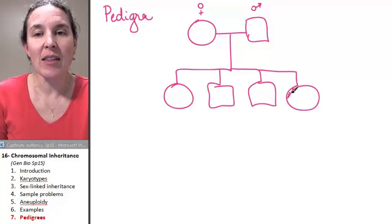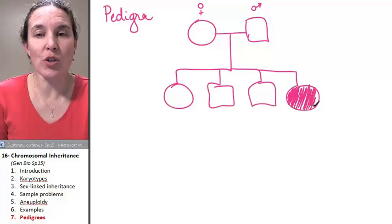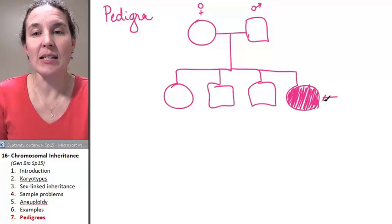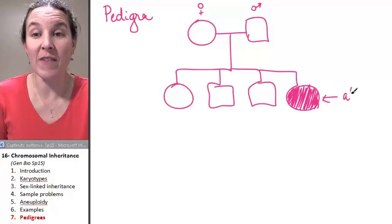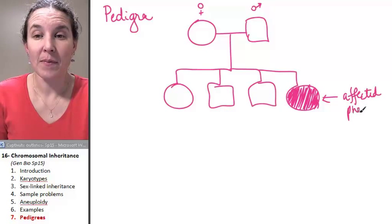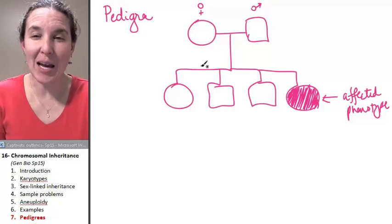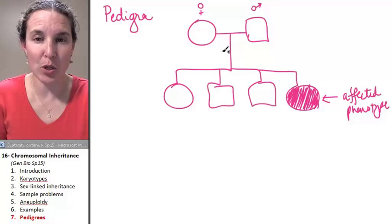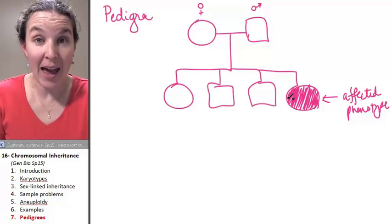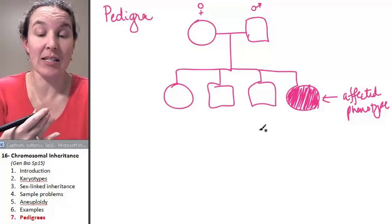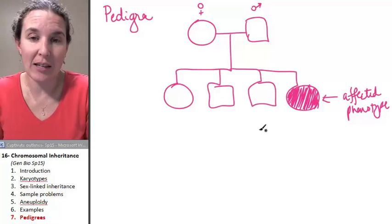Usually you make a pedigree tracking one characteristic. And if the circle or square is colored in, this is someone with the affected phenotype. So any time you see a fully colored in person, then you know that they have the condition. They're expressing or displaying the condition.